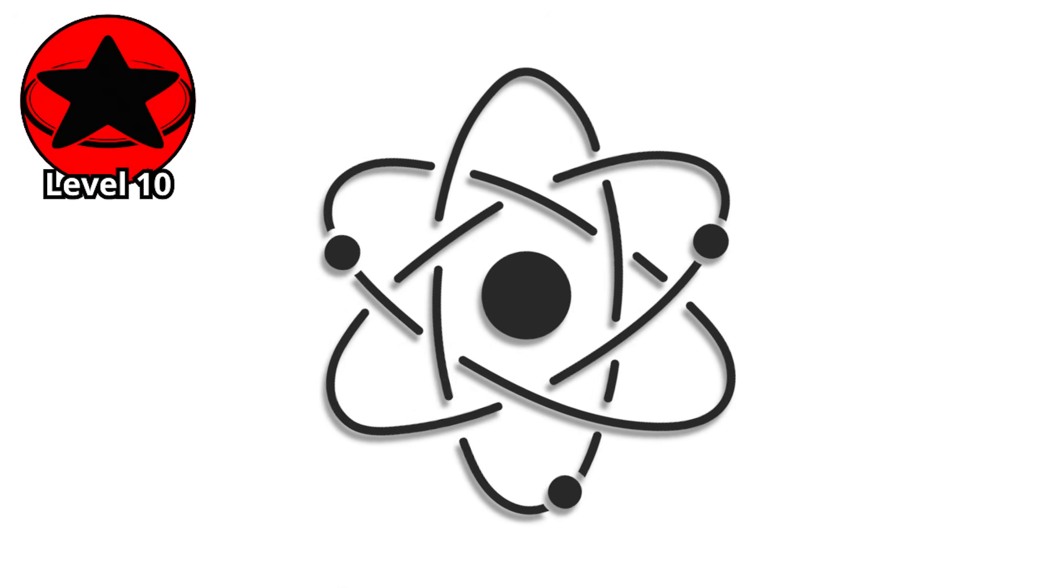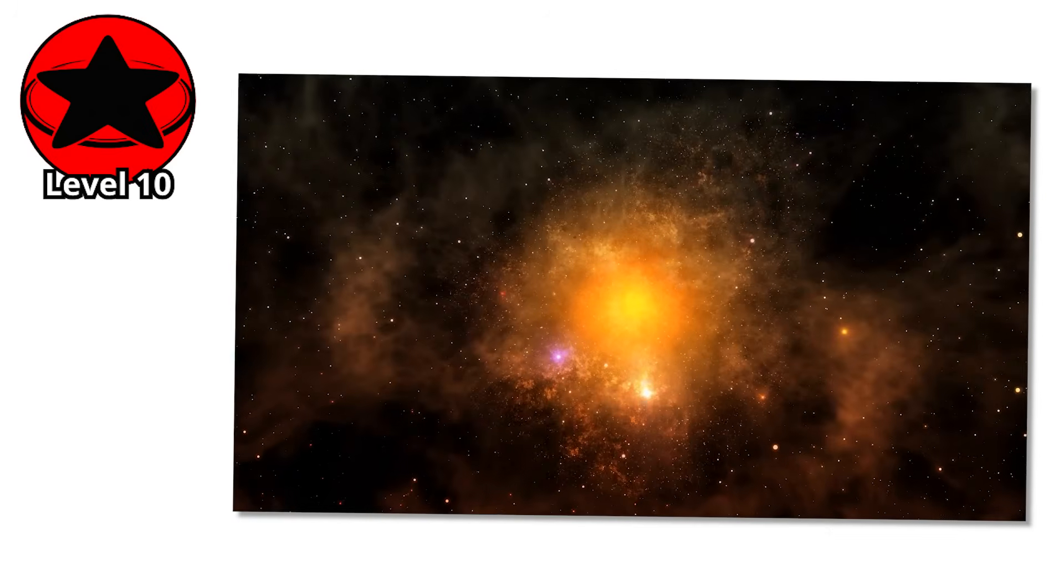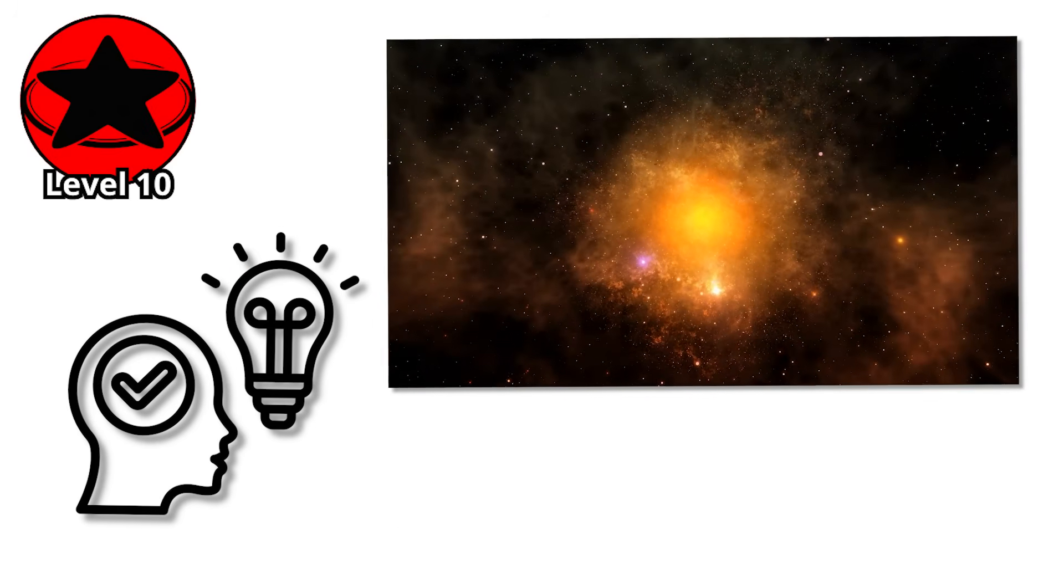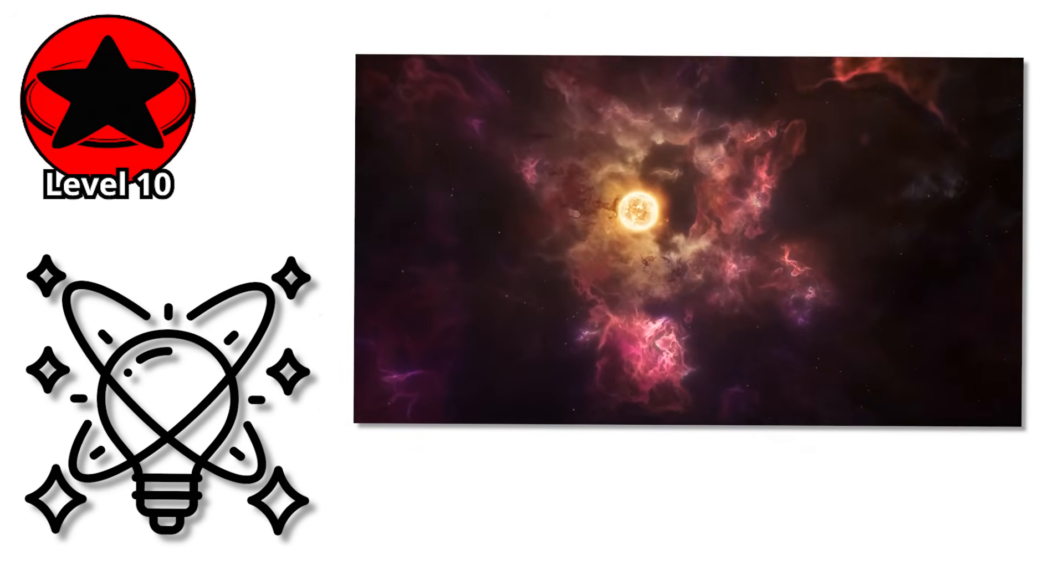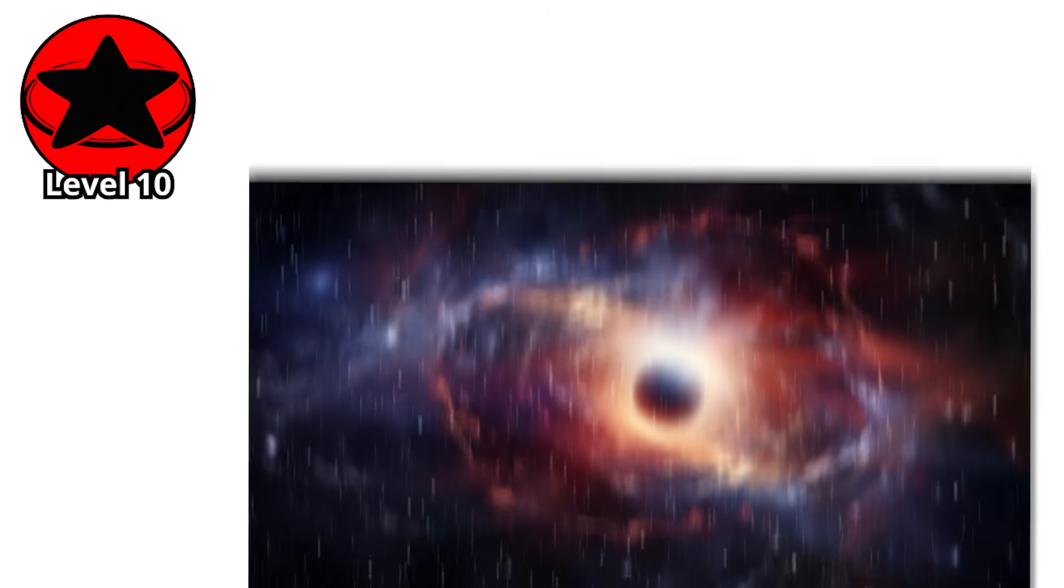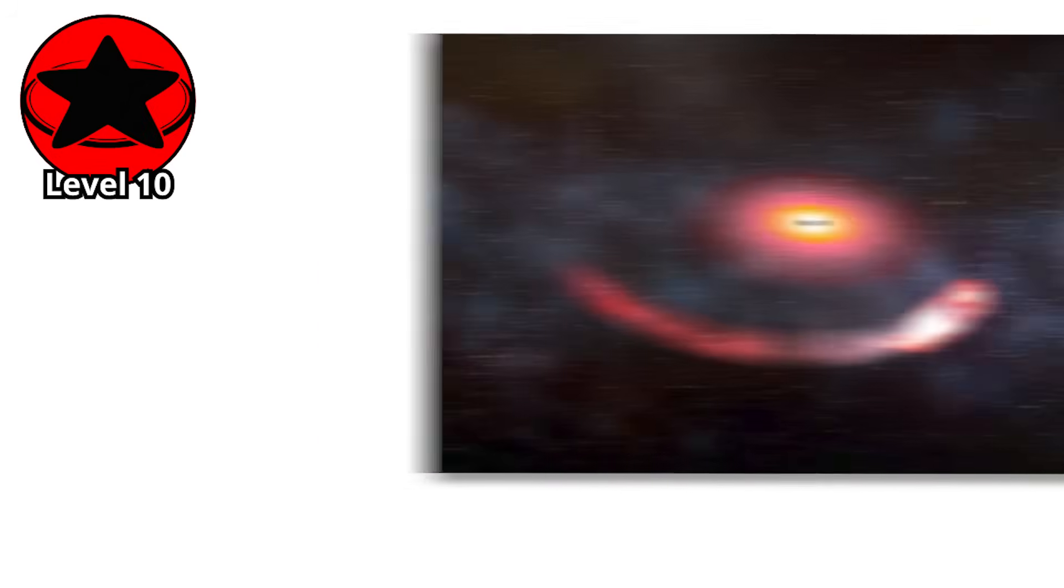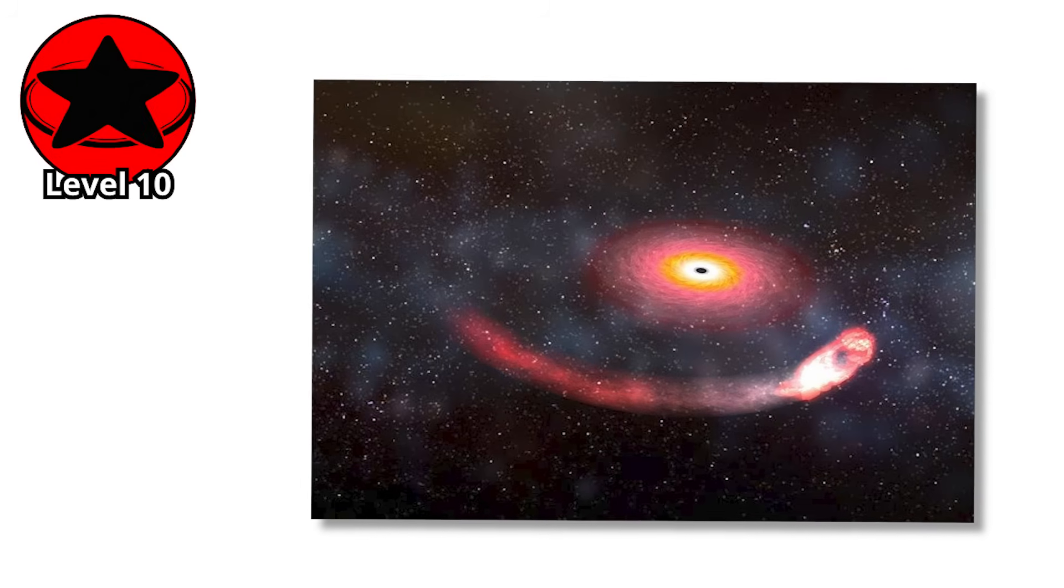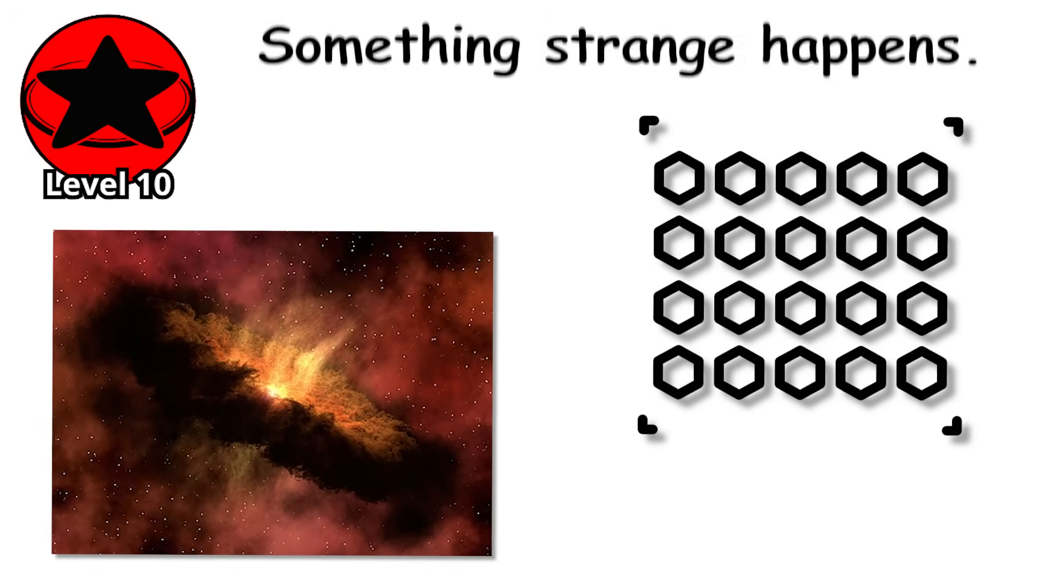Welcome to the edge of theoretical physics where the universe might have created quasi-stars, objects that defy every intuitive understanding of what a star should be. Imagine this. In the chaotic early universe, a massive cloud of gas begins collapsing. But instead of forming a normal star, a black hole forms at the center first. Normally, that would be the end. The black hole would consume everything. But if the gas envelope is massive enough, something strange happens.